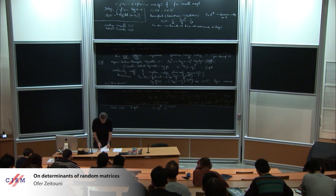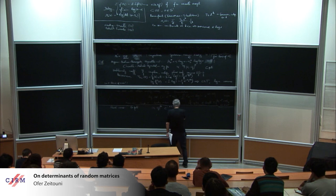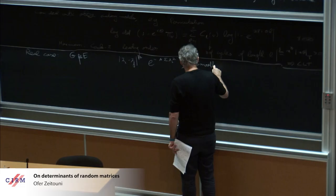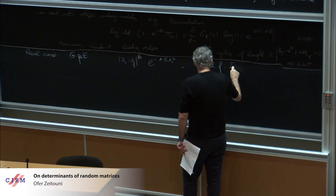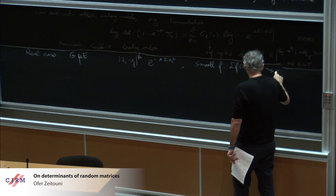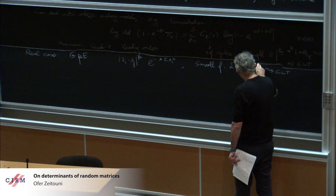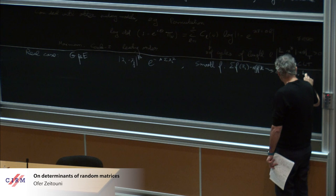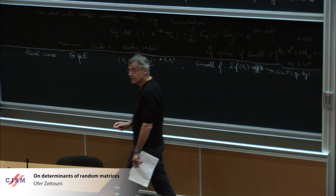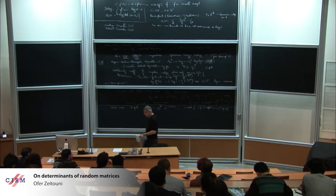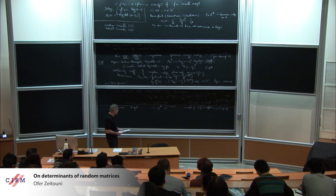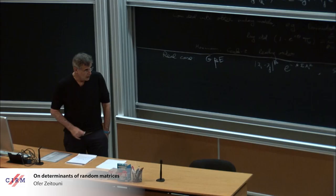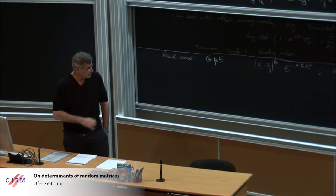For smooth F, we have sum of F of lambda_i minus the mean goes to a CLT. You can remove the integral of F d sigma, where sigma is semicircle, and you get a CLT with mean A and variance B. In general, unless beta equals two, you may get a mean. In some generality, this was done by Johansson using loop equations, integration by parts. There was work of Alice Guionnet using stochastic calculus.